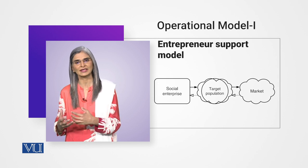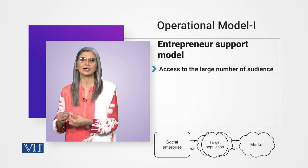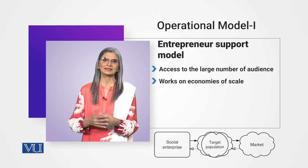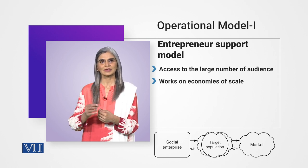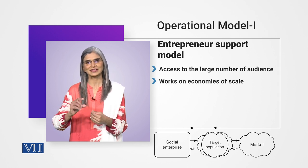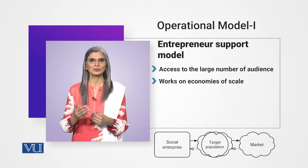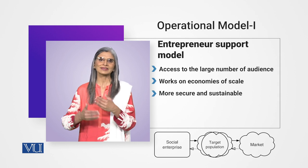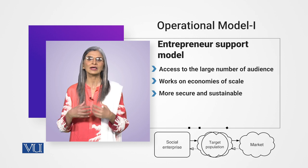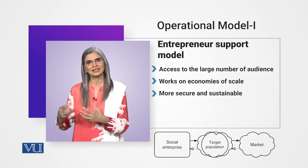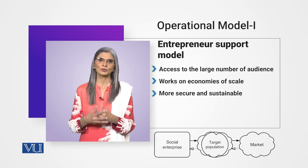Social entrepreneurship ka ye model, jisse Entrepreneur Support Model kehte hain, ki kuch strengths hain. Sab se pehle us ki large number of individuals or firms tak pahunch ya access se hai — ye macro level pe zyada logon ko, jise kehte hain economies of scale, us level pe kaam karta hai. Aur ye zaroori bhi hai: jab tak aap chhoti chhoti loans bhout sare logon ko nahi dhete to scalability nahi hogi or business viable nahi hoga. Doosre, chunke ye self-financing institution hai, self-financing model hai, to is ki sustainability zyada secure hoti hai — isko kisi se grant nahi chahiye, jo revenue generate karna hai enterprise se earn karna hai, usi se dobara aage services fraham karna hai. Ye ek sustainable model hai.